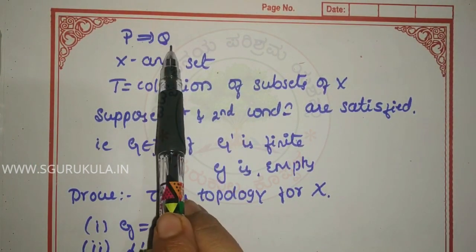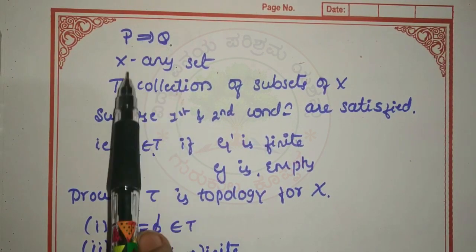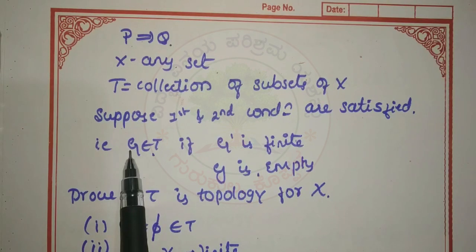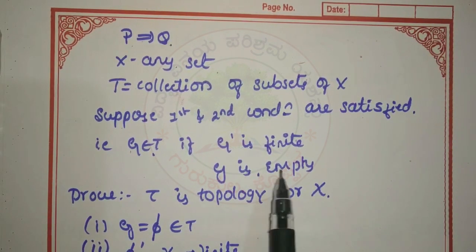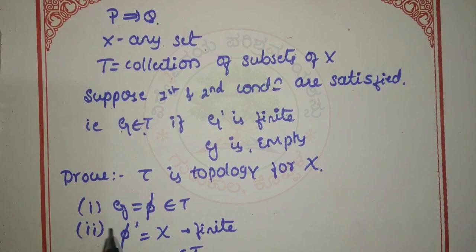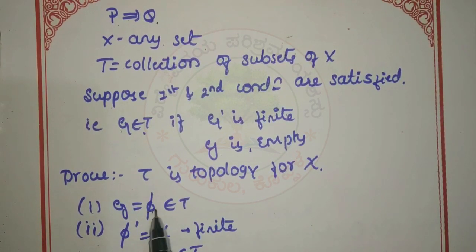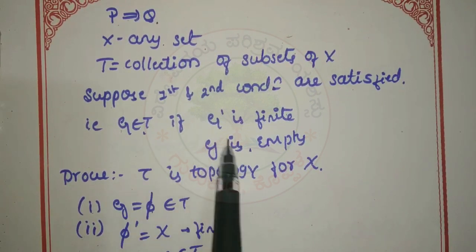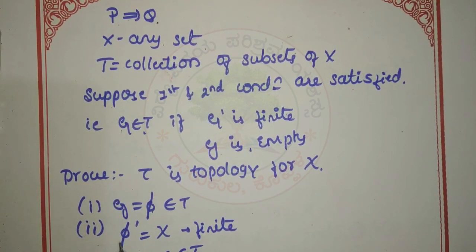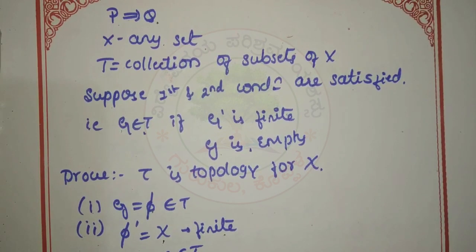First, we prove P implies Q. X is a set and T is the collection of subsets of X satisfying the given conditions. First condition: phi belongs to T, since G equals phi satisfies the definition. Second condition: phi' equals X, and X must be finite, therefore X belongs to T.